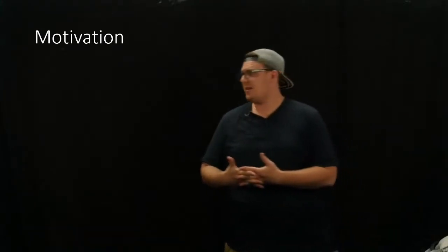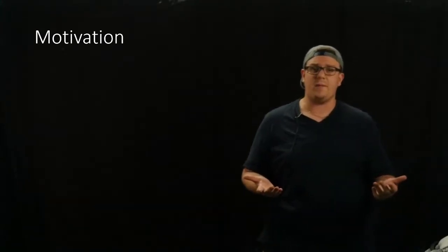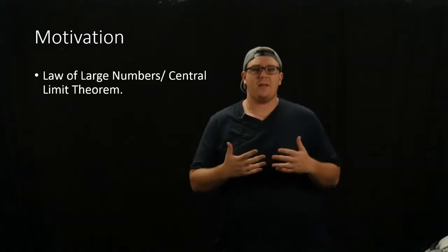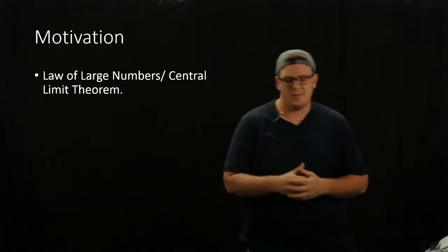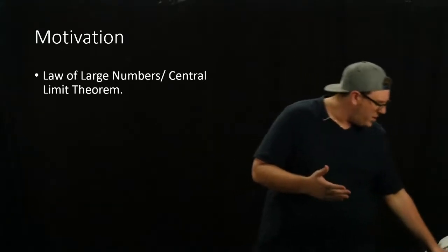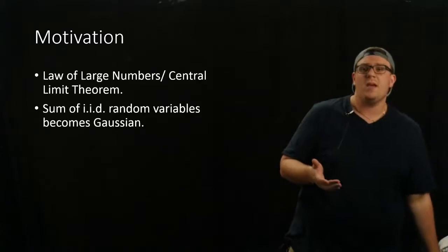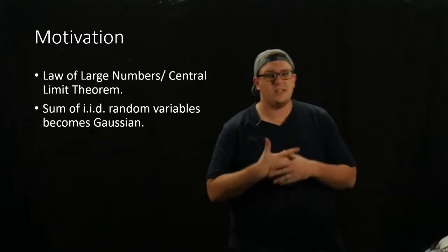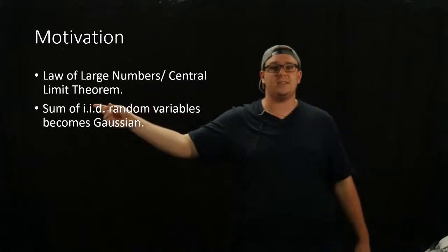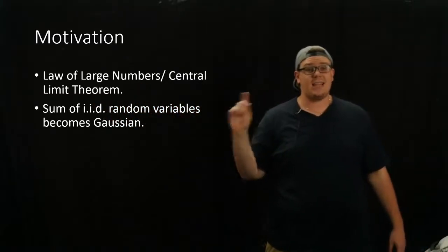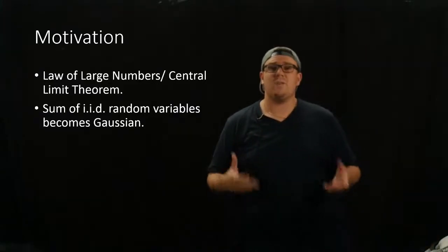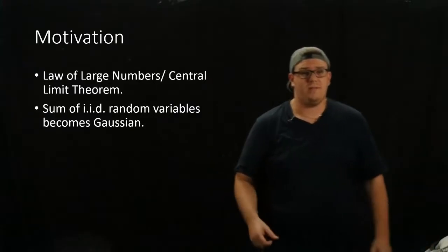Now we're going to talk about our motivation for doing this video. Why are we even talking about Gaussian random variables? Well, we have to talk about the law of large numbers and the central limit theorem. Basically, what these two theorems say is that if you take the sum of independent, identically distributed — that is what IID stands for — independent and identically distributed random variables, and you average them, you end up with a Gaussian random variable.